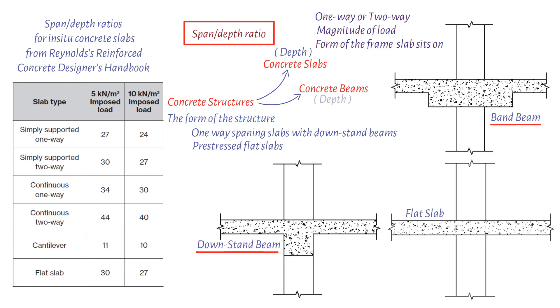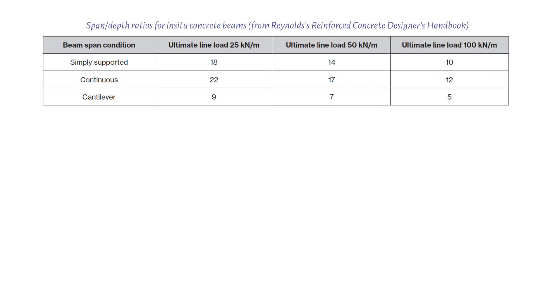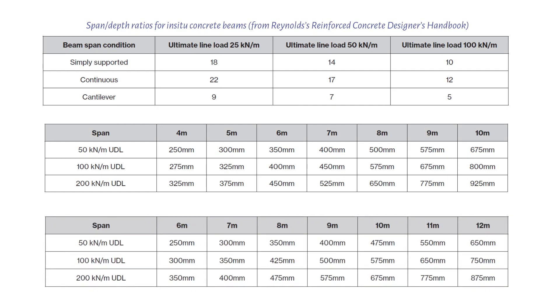As with concrete slabs, it is possible to estimate the depth of a beam when considering its span-depth ratio. The following table provides guidance on what these ratios are based on the type of beam structure. The following tables provide more accurate estimated sizes for downstand T-beams and band beams respectively. In order to use these tables, you must have calculated an ultimate line load per meter length. All depths include the thickness of the slab the beams are supporting.